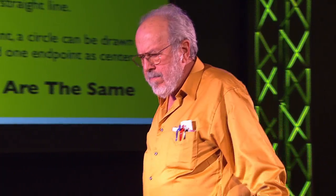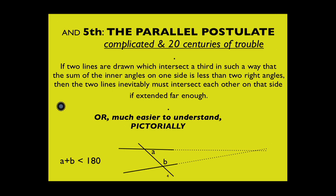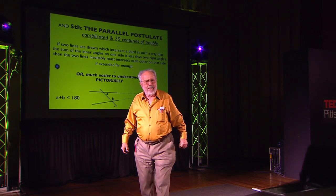The problem became more severe with the fifth postulate. The fifth postulate is called the parallel postulate, and it led to 20 centuries of fighting arguments and discussions. Euclid himself seems to have understood that there was a problem with it. The parallel postulate was much more complicated than the first four. Let me just read it: if two lines are drawn which intersect a third line such that the sum of the inner angles on one side is less than two right angles, then the two lines inevitably must intersect each other on that side if extended far enough. It's a much more complicated postulate than the first four.